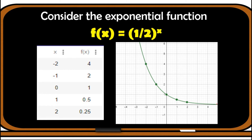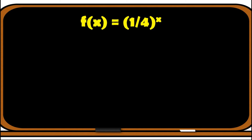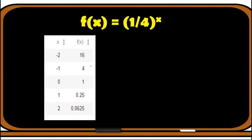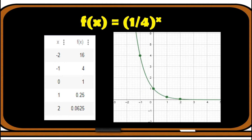The values will never touch zero and will not go to negative values on the y-axis. Let us have another example using f(x) = (1/4)^x. The base 1/4 satisfies the condition that a is between zero and one. Looking at the table of values and graph, the same behavior is shown: as x increases, f(x) decreases and the values get closer to zero, never touching or going beyond zero.